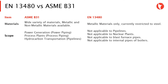The ASME B31 code has different scopes included in its different parts — for example, power generation, power piping, process plants as in process piping, and hydrocarbon transportation for pipelines. The EN 13480, on the other hand, is not applicable to pipelines, not applicable to nuclear plants, not applicable to blast furnace pipes, and not applicable to internal pipes of boilers.